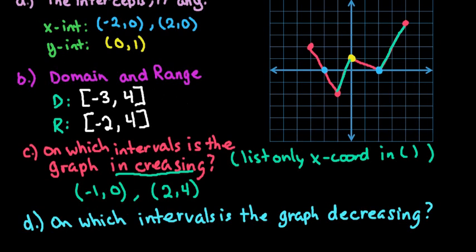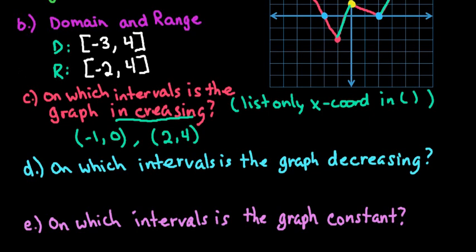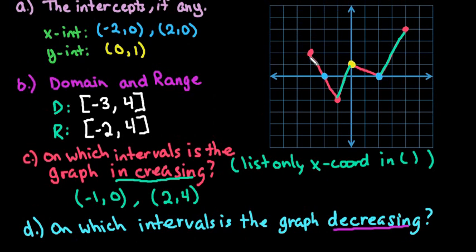As far as decreasing goes, on which interval is the graph decreasing? So I'm going to do this one in purple. We're going to look for decreasing, and we can see that it's going down from left to right here in this interval and also in this interval. Again, we list just the x-coordinates in parentheses.